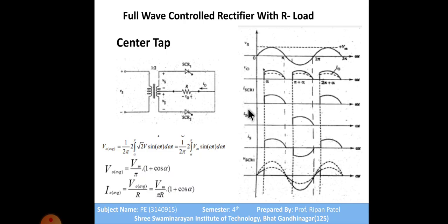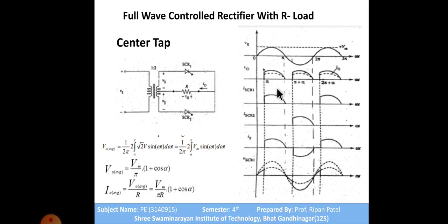This is why it is called a full wave controlled rectifier with a purely resistive type of load. The current waveform shows current through SCR1 during the positive half cycle and current through SCR2 during the negative half cycle. SCR2 is in reverse bias during the positive half cycle, so it does not conduct. The output voltage is the combined full wave waveform.